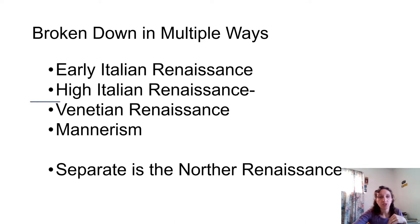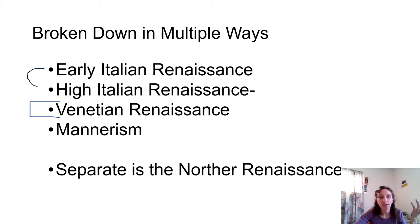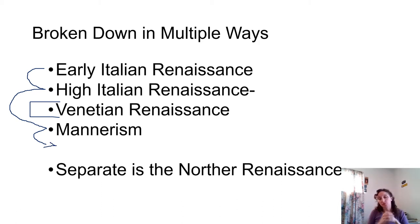Remember the Venetian Renaissance is a geographical Renaissance that takes place specifically in and around Venice, similar to how the Northern Renaissance is separate. The early Italian Renaissance evolved into the High Italian Renaissance, which evolved into Mannerism, which then leads to the Baroque era — the last thing we'll cover in this lecture.